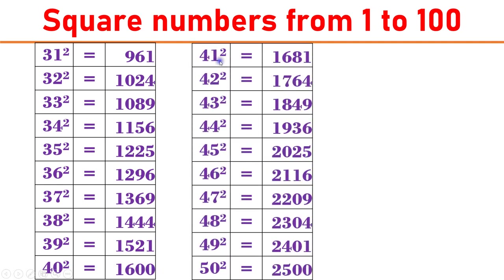41 square equals 1681. 42 square equals 1764. 43 square equals 1849. 44 square equals 1936. 45 square equals 2025.